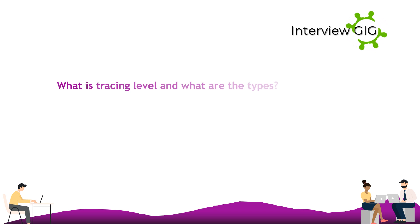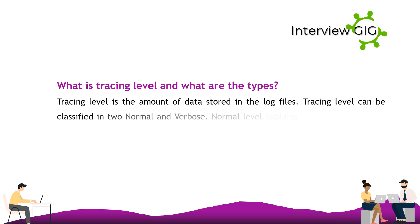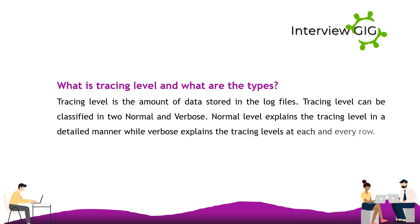Tracing level is the amount of data stored in the log files. Tracing level can be classified into normal and verbose. Normal level explains the tracing information in a detailed manner, while verbose explains the tracing levels at each and every row.